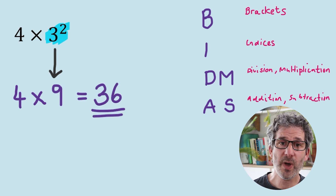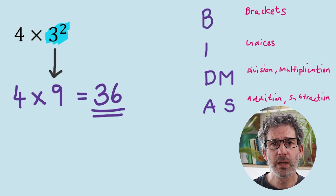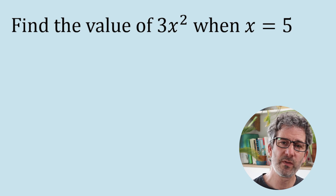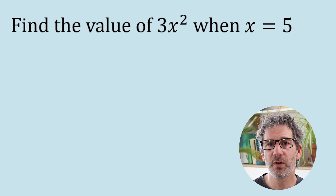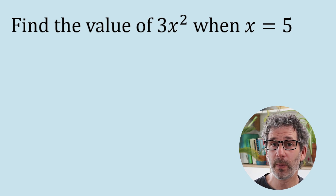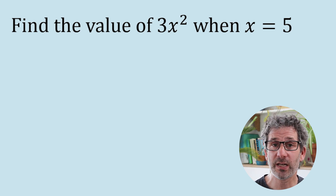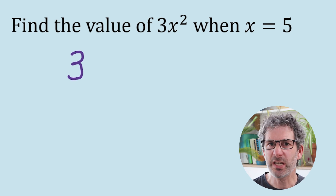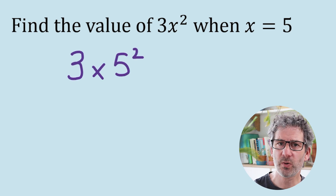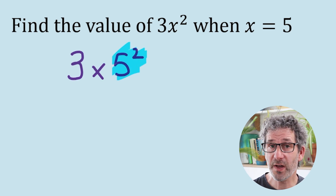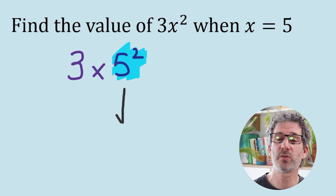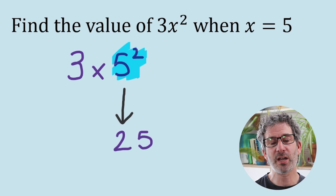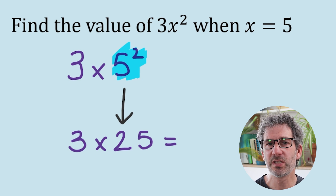This might seem reasonably straightforward, but in a slightly different context — something like: find the value of 3x squared when x is 5 — it often catches people out. It's essentially 3 times 5 squared. You must do the 5 squared first: 5 squared is 25. Then you times it by 3, which gives you 75.